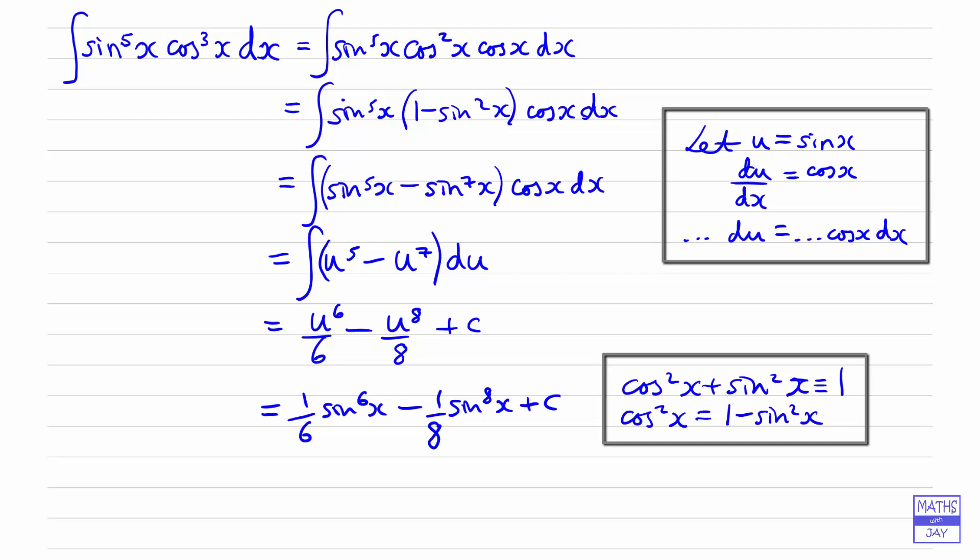So that's it. So the tricky bit really is knowing how to start. So look very carefully at how we decided to start this one. If you had gone to try to look at the 5, you would have had to have rewritten sine to the power of 5x as sine to the power of 4x times sine x.